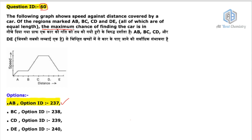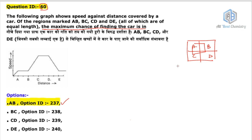What they are asking is: what is the maximum chance of finding the car? Let me give you an example. Say you have four rooms — A, B, C, D — and the car is moving through them. In which room do you have the maximum chance of finding it? You would say: the room in which it stays for the longest time. It all depends on time — more time it spends somewhere, more chance of finding it there.